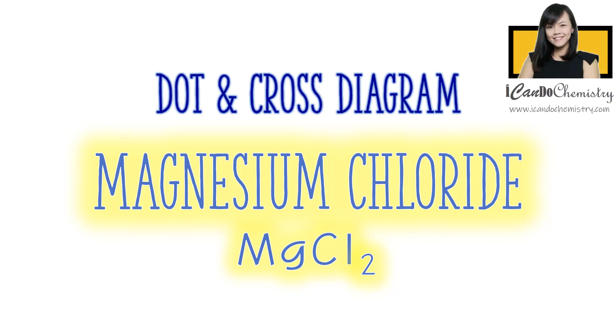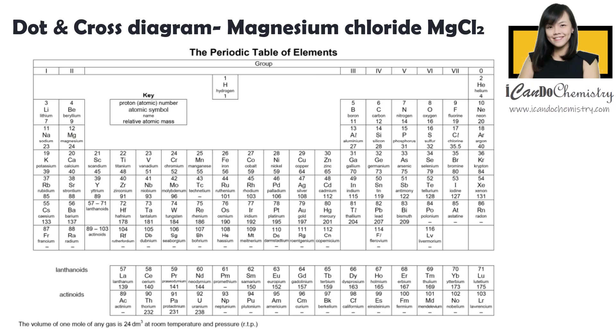In this video, we will focus on dot and cross drawing of magnesium chloride. Let's refer to the periodic table. We can determine the number of electrons each atom has from the periodic table.